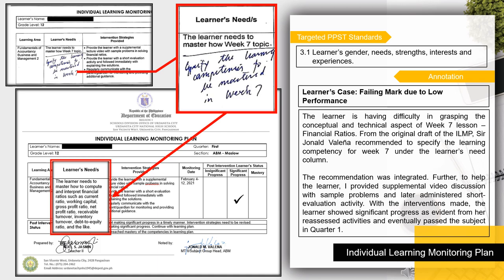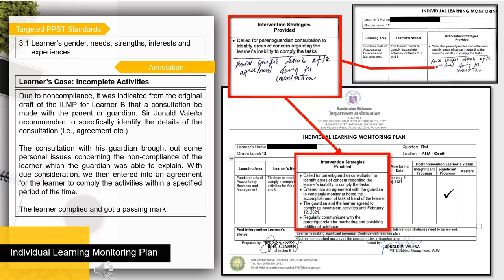The learner eventually passed the subject in Quarter 1. On the other hand, the learner's case for this sample of ILMP is having incomplete remarks due to non-compliance with some activities. It was indicated in the original draft that a consultation would be made with the guardian. The consultation with the guardian brought out some personal issues concerning the non-compliance of the learner, which the guardian was able to explain. With due consideration, we then entered into an agreement for the learner to comply with the activities within a specified period of time, and the learner complied and received a passing mark.